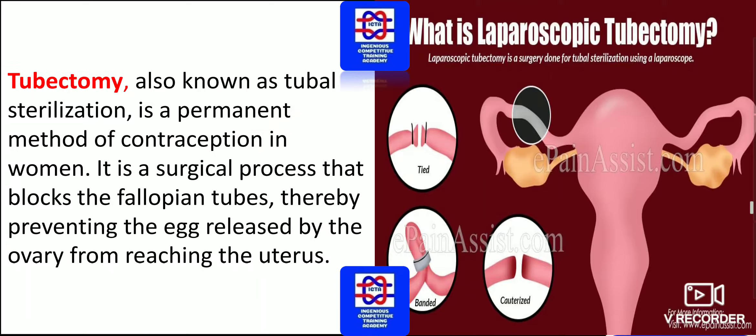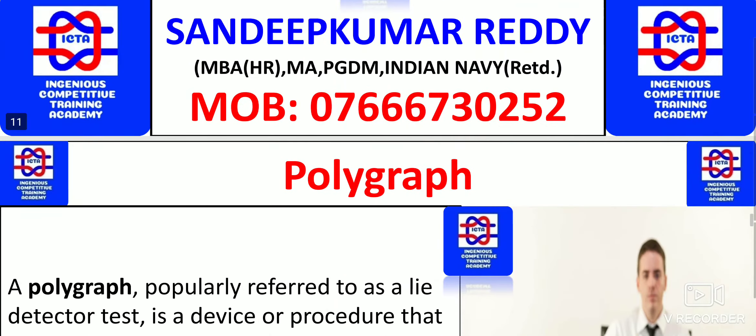Tubectomy is for women — in order to prevent having a baby. After tubectomy, they will not have any kind of baby. It is also known as tubal sterilization and is a permanent method of contraception in women. It is a surgical process that blocks the fallopian tubes, thereby preventing the egg released by the ovary from reaching the uterus.